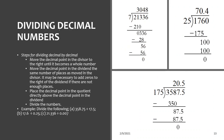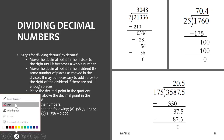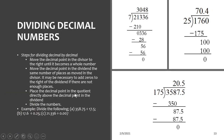For dividing a decimal by a decimal: move the decimal point to the right of the divisor until you make it a whole number, then move the decimal point in the dividend the same number of places. It may be necessary to add zeros to the right if there are not enough places. Then place the decimal point in the quotient directly above the decimal point in the dividend, and do your division.